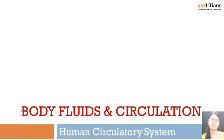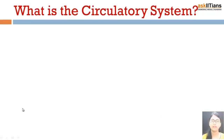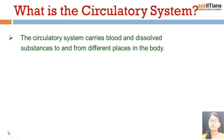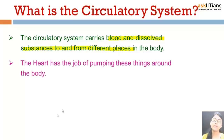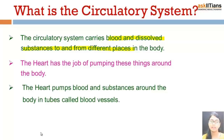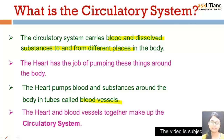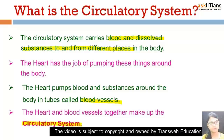The circulatory system is the system which carries blood and dissolved substances to and from different places in the body. The heart has the job of pumping all these things around the body, and the heart pumps blood and substances in tubes. These tubes are called blood vessels. The heart and blood vessels together form a system known as the circulatory system.